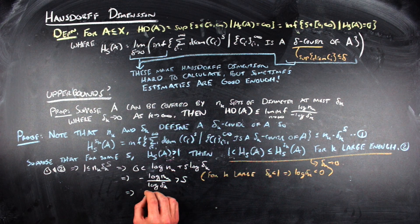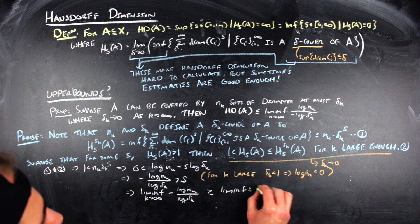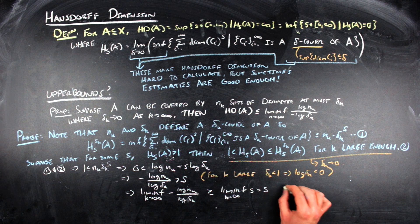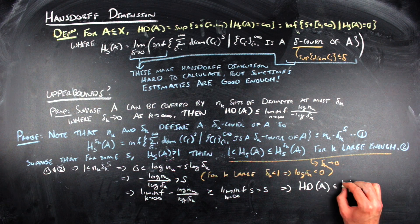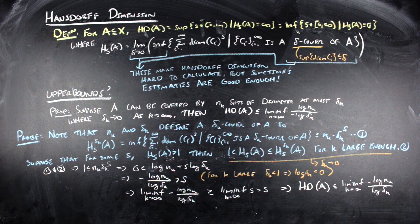Since s doesn't depend on k, we can take a limit inferior of both sides. The only change is that we'll have a limit inferior on the left, and the inequality goes from strictly greater than to greater than or equal to. That means the Hausdorff dimension of A is less than or equal to the limit inferior as k goes to infinity of minus log n sub k over log delta sub k, because the log ratio of those n_k and delta_k things does not depend on s.